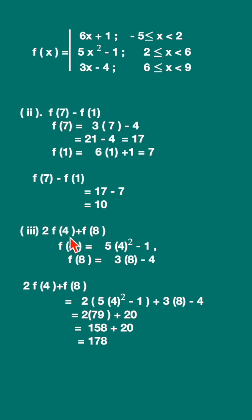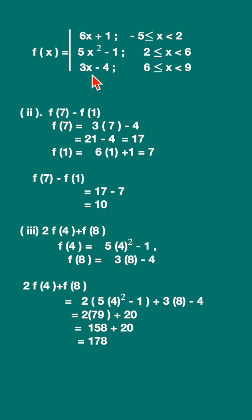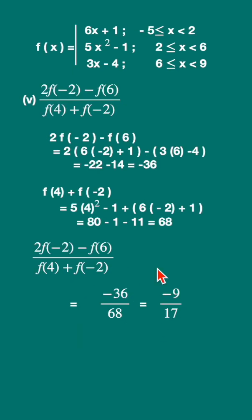For the third sum, find f(4) and f(8). f(4): x = 4 is in [2, 6), so use 5x² - 1. f(8): x = 8 is in the range 6 < x < 9, so use f(x) = 3x - 4. Substitute the x values and simplify to get the answer.